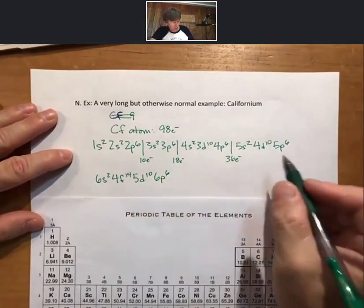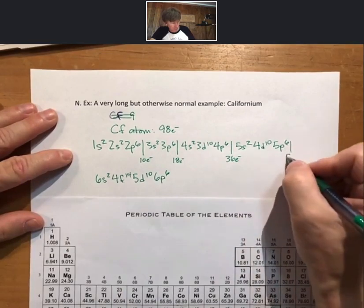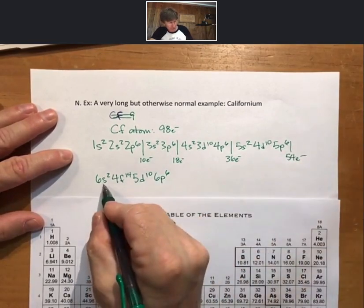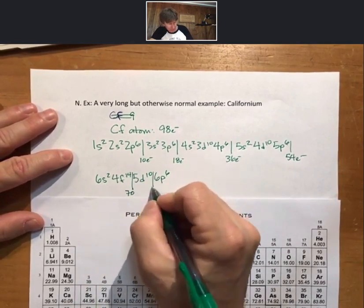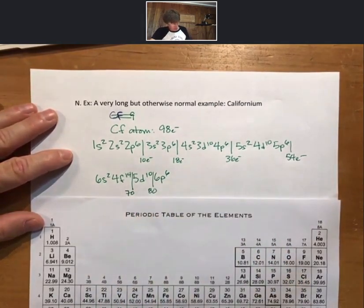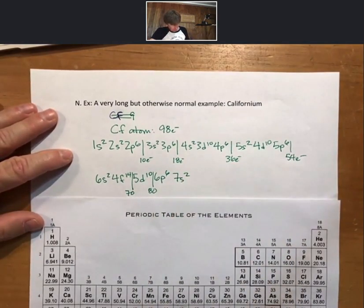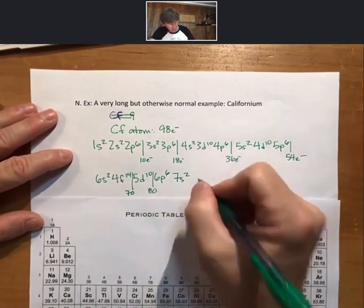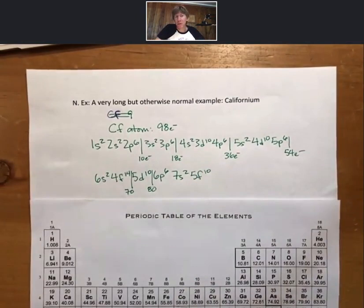Counting up: 36, 38, 48, 54, 56, 66, 70, 80, 86. So at 86 electrons we have 12 more to go. Then 7s2, double asterisk, 5f10. And that is the complete electron configuration for californium.